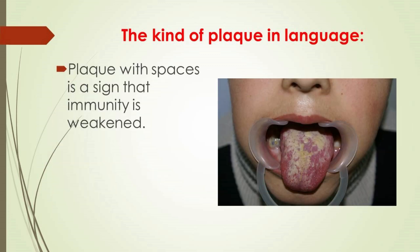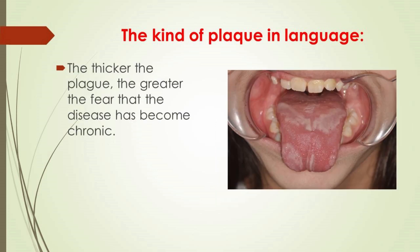A plaque with spaces on the tongue is a sign that immunity is weakened. Thin plaque indicates the disease is either just beginning or is in a light superficial form. The thicker the coating, the greater the likelihood that the disease has become chronic. High coverage of the tongue often indicates common diseases such as gastritis or gastric/duodenal ulcer.